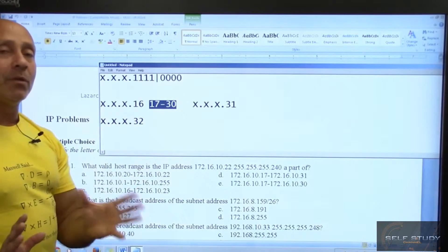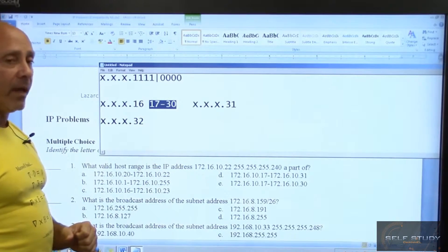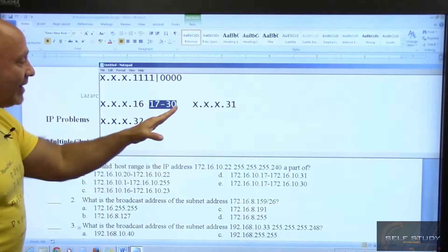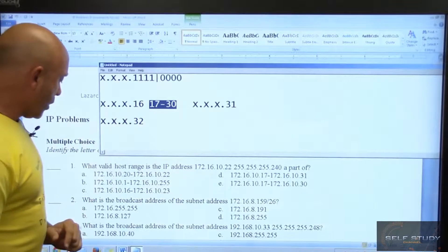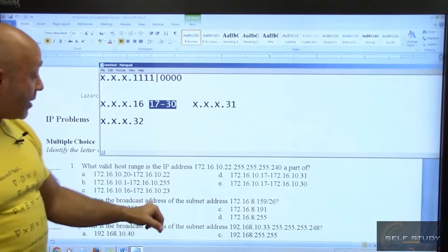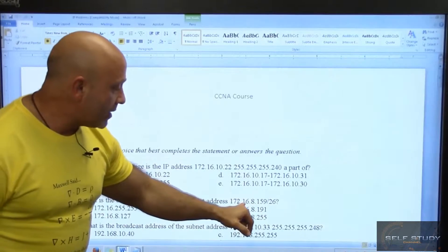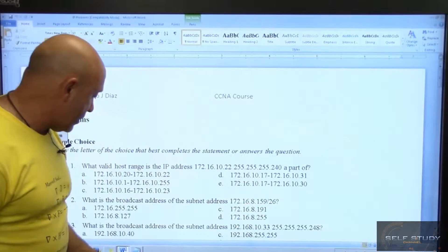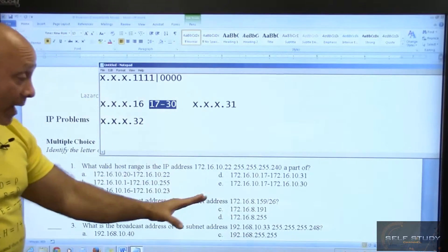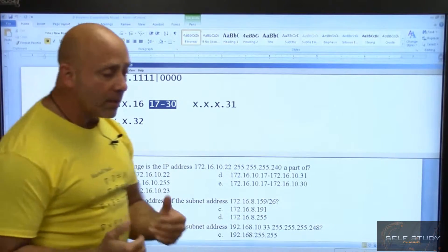In this case it was 22, so obviously I wasn't going to go beyond 16. I just did it so you can see a visualization. So 22 will not fall in the 32 network. That's the first problem. Let's go to question number two. Question number two states: what is the broadcast address of the subnet address 172.16.8.159? That's an address, 159 slash 26.